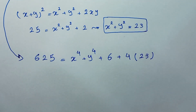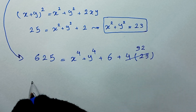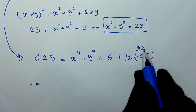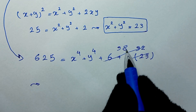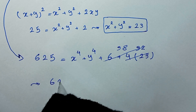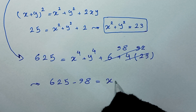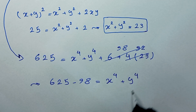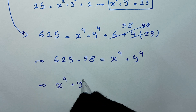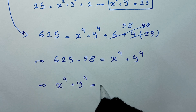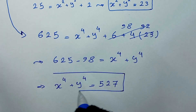4 times 23 equals 92, and 6 plus 92 equals 98. We take 98 to the other side: 625 minus 98 equals x to the power of 4 plus y to the power of 4. Therefore x⁴ plus y⁴ equals 527, and this is our final answer.